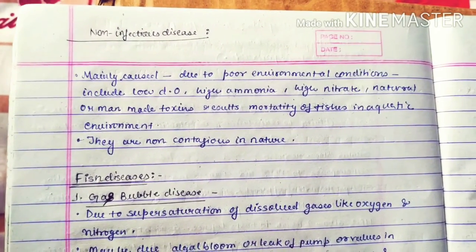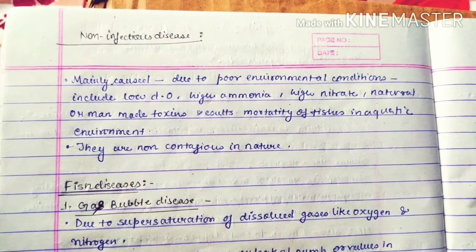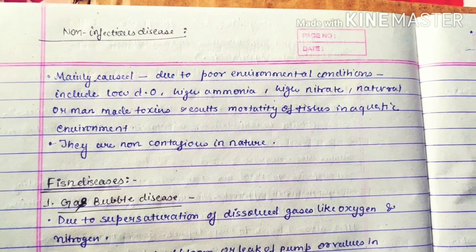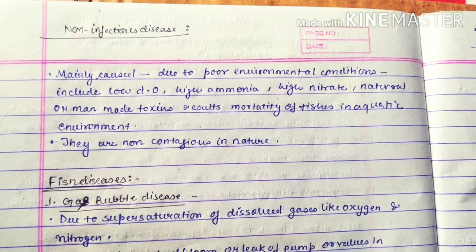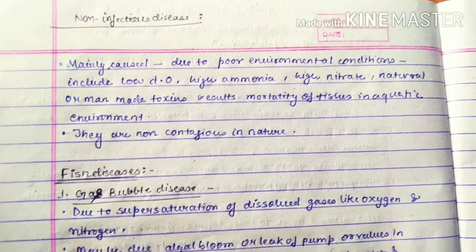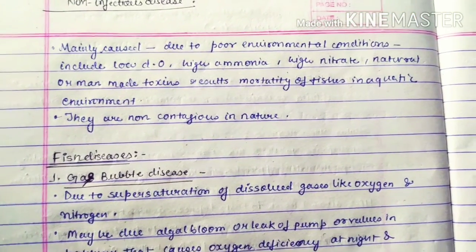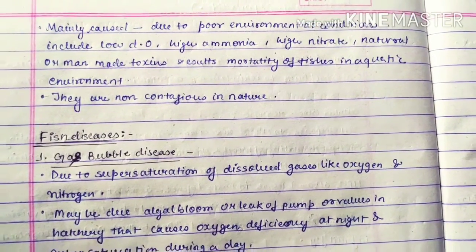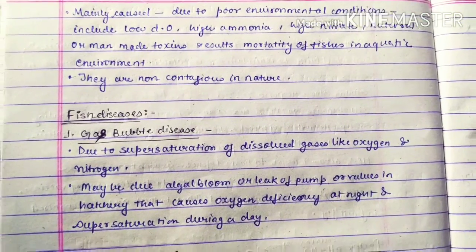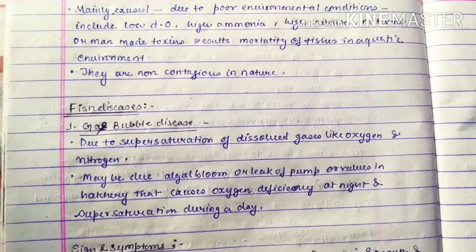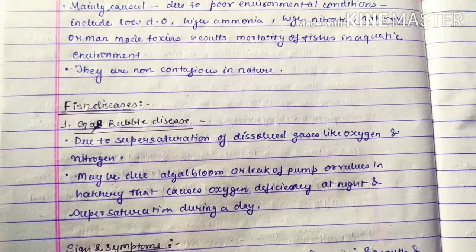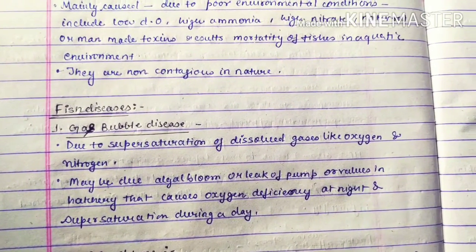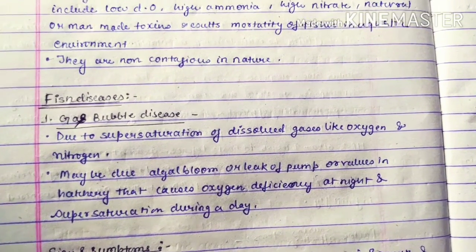Non-infectious disease is mainly caused due to poor environmental conditions. For example, low dissolved oxygen, high ammonia, high nitrate, and natural or man-made toxins result in mortality of fishes in the aquatic environment.